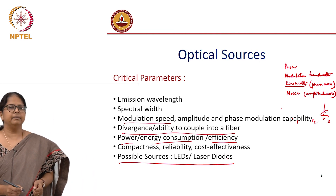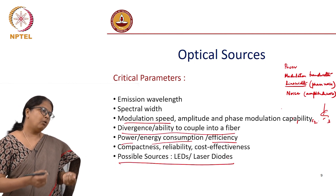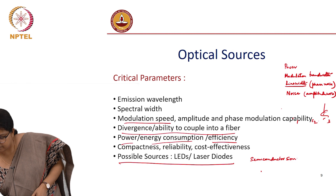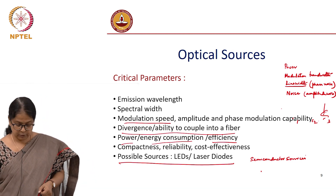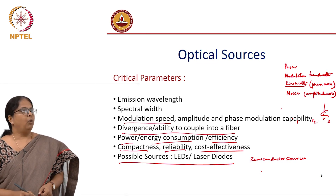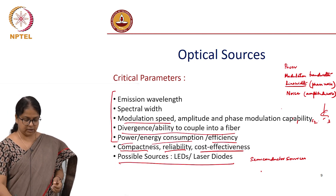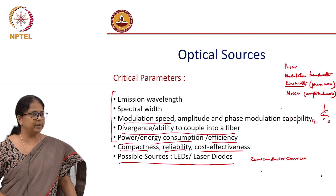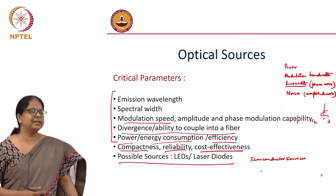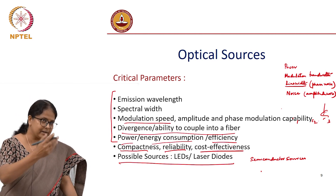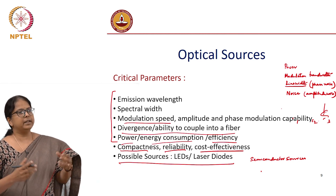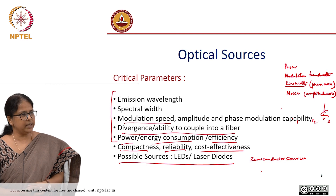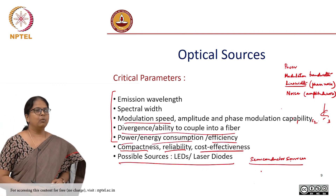Optical communication became a big commercial success only because semiconductor sources were available, which were compact, reliable, and cost effective. In addition to having all the required features, if you want to deploy commercially, you also need these last parameters. Because semiconductor LEDs and semiconductor light sources were available — which were reliable, had a long lifetime, could be deployed very easily, were very compact and energy efficient — that is how optical communication became a commercial success. The next thing is to look at the basic working principles of semiconductor sources.